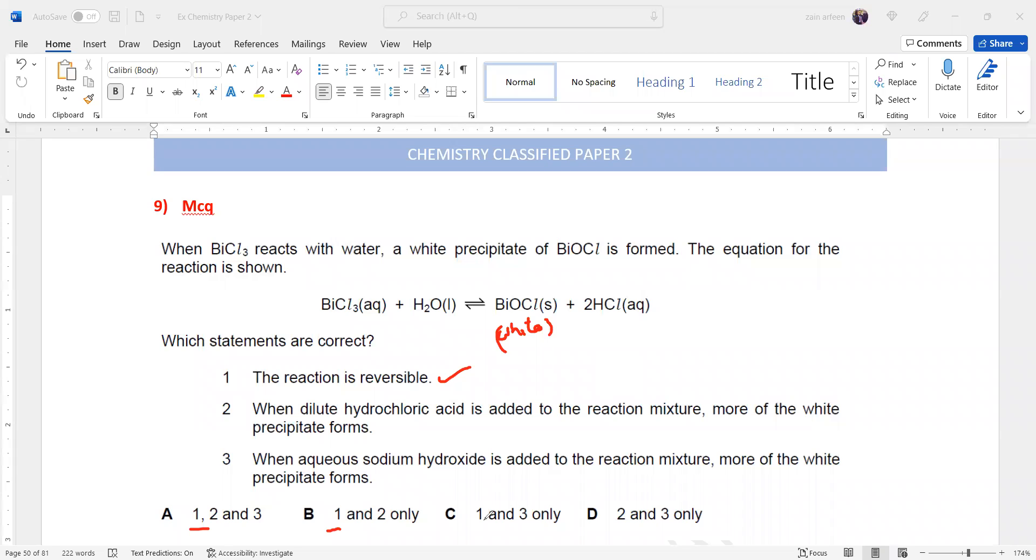Any option which has statement one is right. So it can be A, it can be B, or it can be C, but it cannot be D.